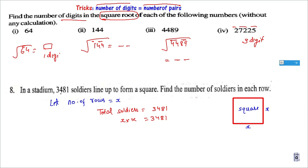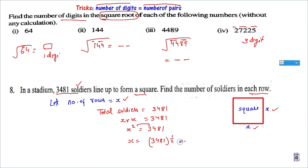In this case, 3481: the number of rows and columns are equal in the arrangement. If I let the number of rows be x, then total soldiers = x × x = x². So x² = 3481. This means I need to find the Square Root of 3481. So x² = 3481 means x = √3481. The Square Root of 3481 is 59. So 59 is the answer.